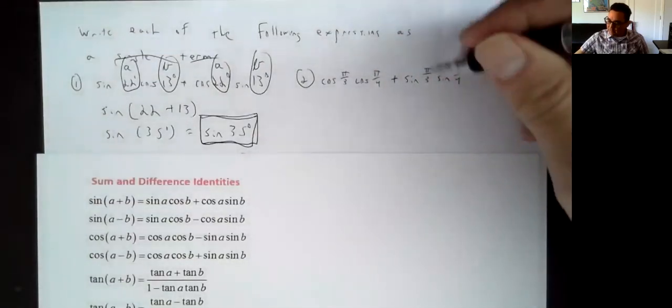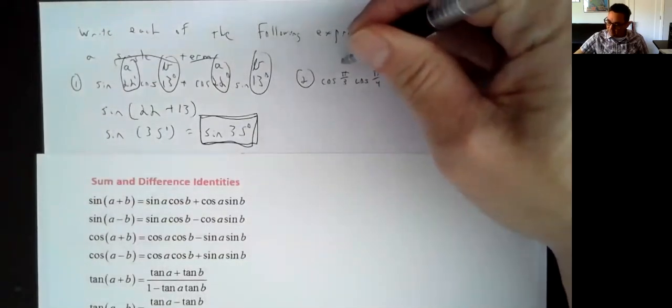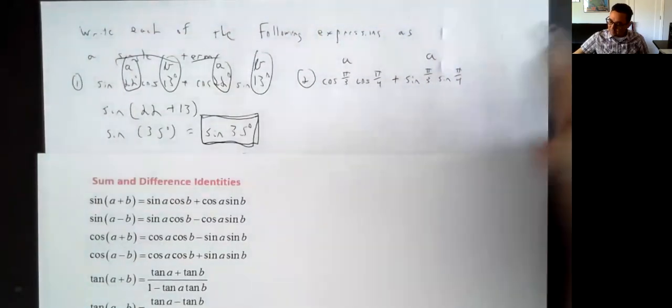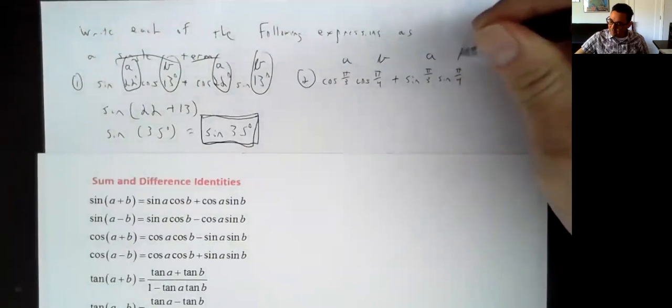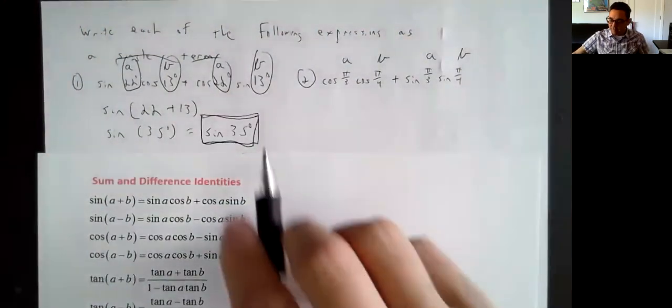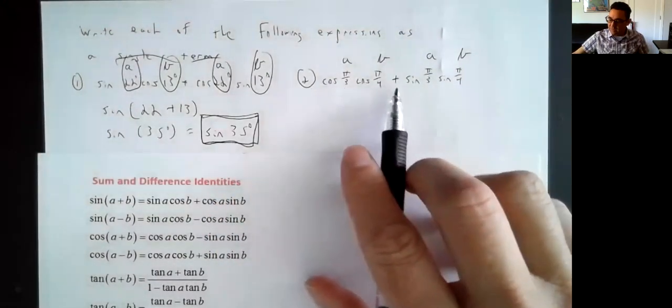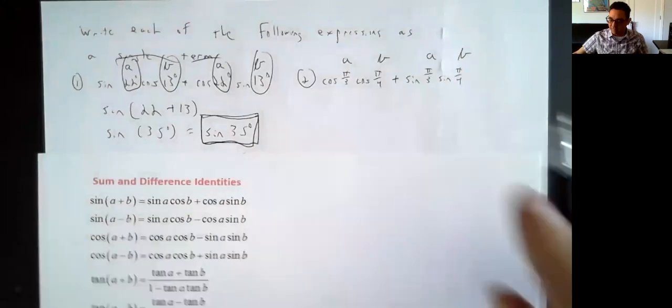Here we have π over 3 showing up in two places, so I'll call that angle A. And π over 4 shows up in two places; I'll call that angle B. So it's like cosine of A times cosine of B plus sine of A times sine of B.